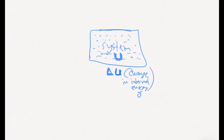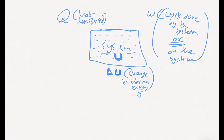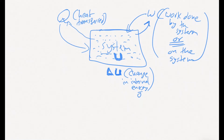From the first law of thermodynamics, this change could be as a result of two things. Heat could be either added or removed from the system, and work could be done on the system or by the system. There is an area of confusion between chemistry students and physics students when it comes to representing the sign of the work done, but the way I'm going to teach you will eliminate this confusion — so make sure you're paying attention.